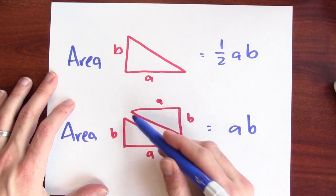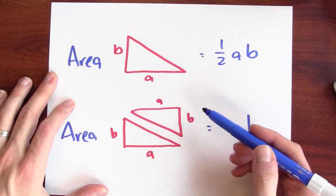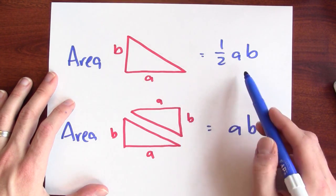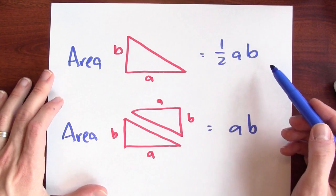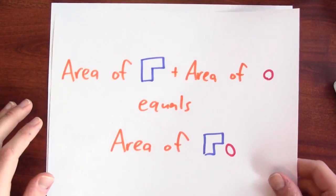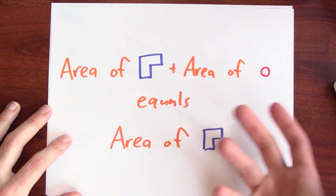But each of these triangles has half the area of the rectangle. So, the area of just the triangle should be half the area of the rectangle. Another way to say this is just that areas sort of add.